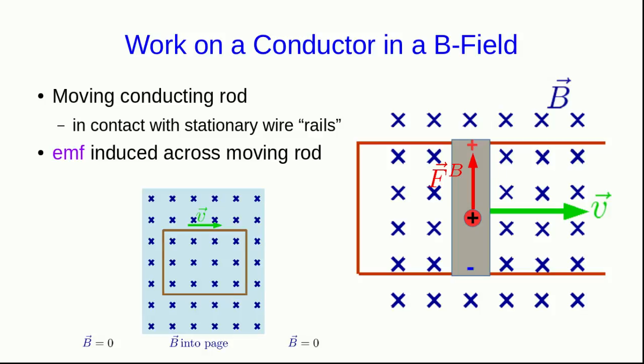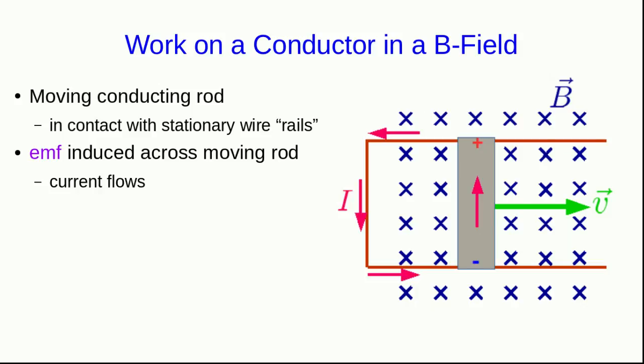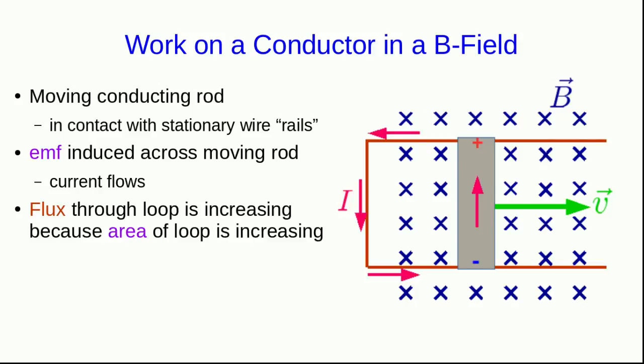This looks a lot like the situation with a loop moving through a B-field, but don't be fooled: with the loop moving through the B-field, there's an emf induced at both ends, so it acts just like a circuit with two batteries — meaning no net current. Here we only have an emf across the rod, so there will be current flowing in the direction indicated, because the flux through the loop is increasing, and we know whenever that happens there will be an induced current.